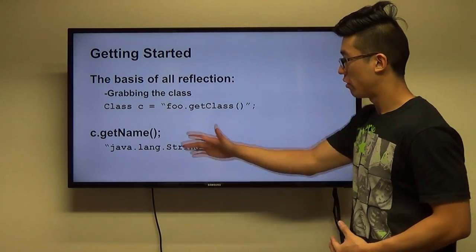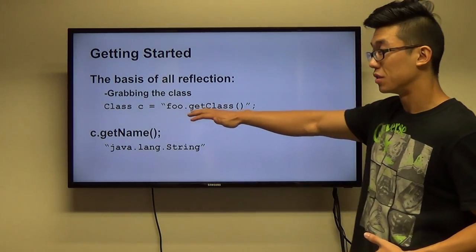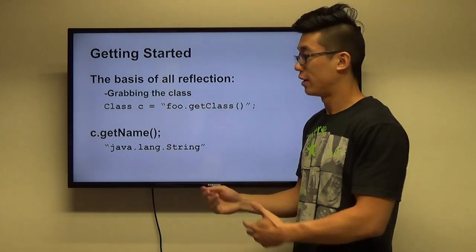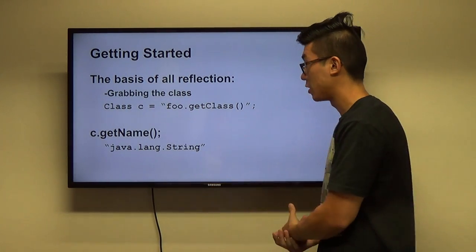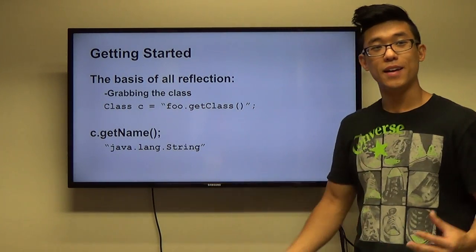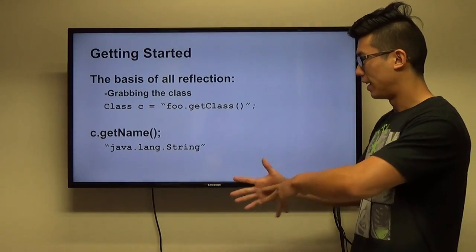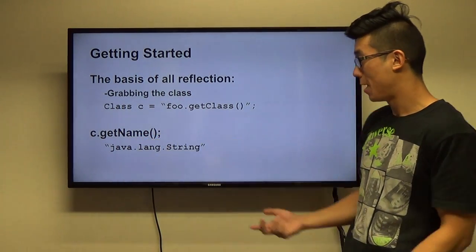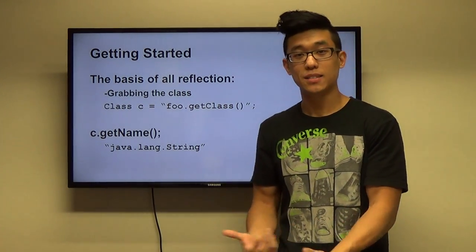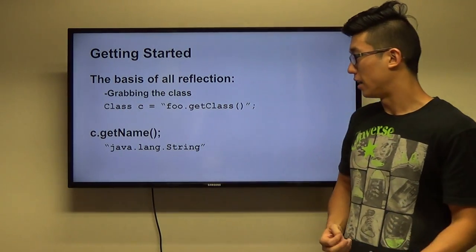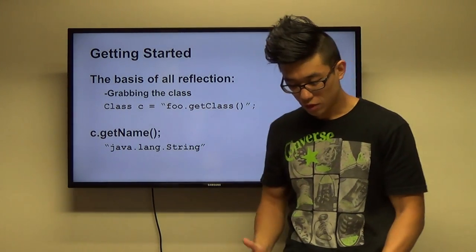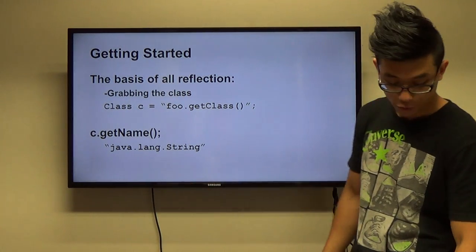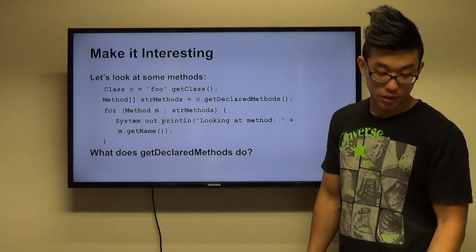The basis of all reflection is grabbing the class itself. Here I have the line of code: `foo.getClass()` where foo is a String literal. That goes into foo and gets the class. Then calling `getName()` gives us the class name: `java.lang.String`. That's pretty basic stuff but we'll be using a lot of this as we move on.